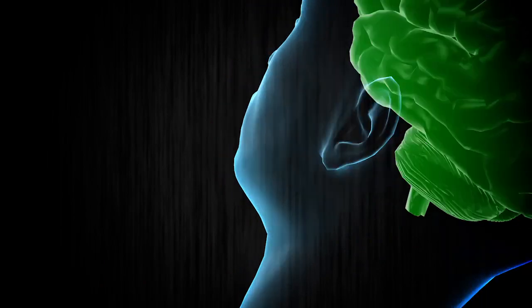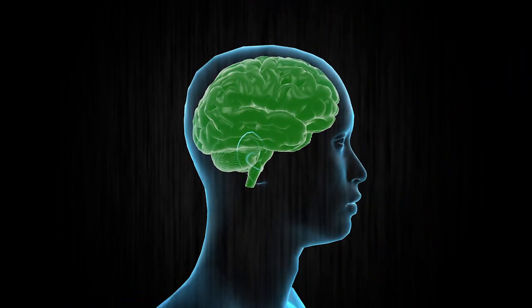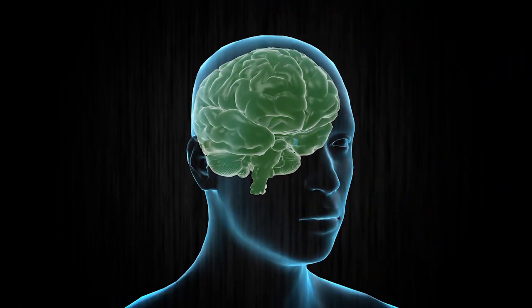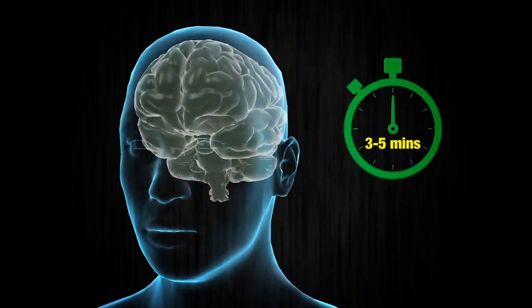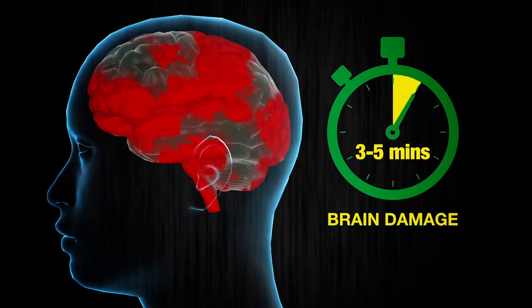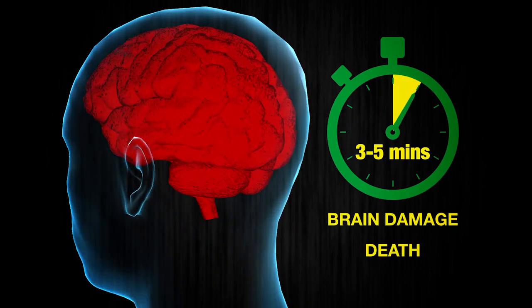An opioid overdose deprives the body of oxygen, which can cause vital organs, especially the brain, to shut down. After three to five minutes without oxygen, brain damage starts to occur, soon followed by death.